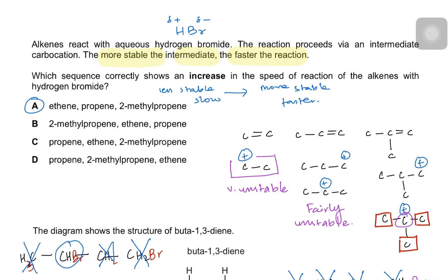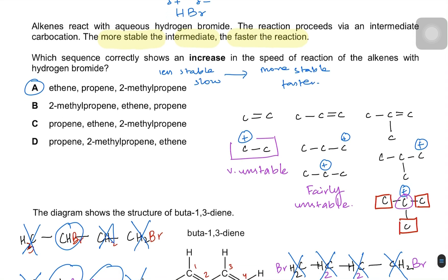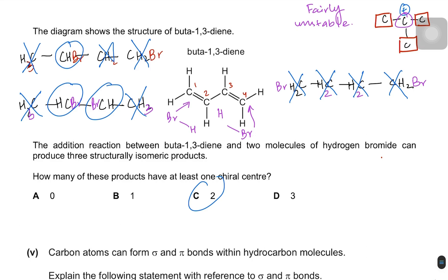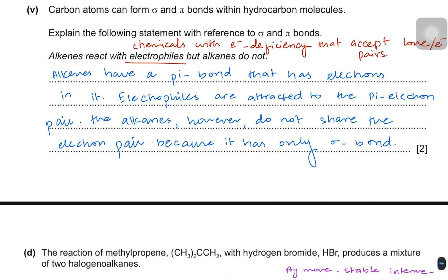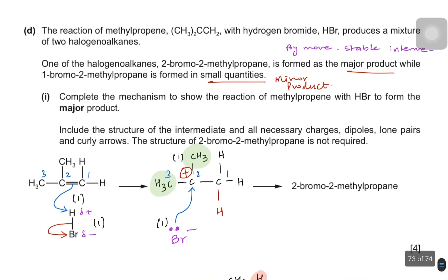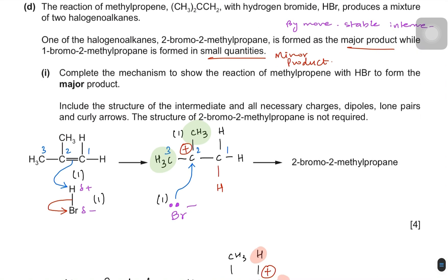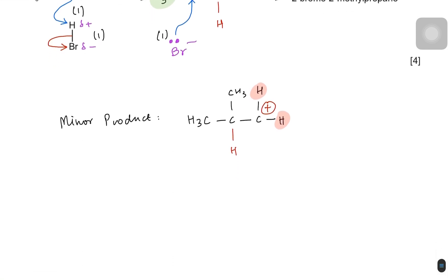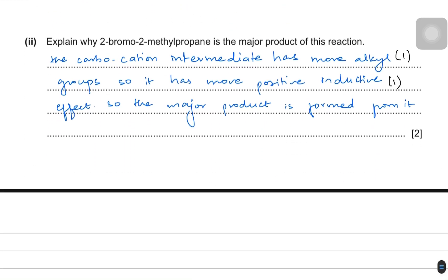Hey everyone, welcome back to another video by Cam Room 5. Last time we were doing some past paper questions for the electrophilic addition reactions. We started with some MCQs where we looked at how the intermediate could be stable depending on the inductive effect, then we did some questions about why pi bonds are reactive and why sigma bonds are less reactive. Then we did the mechanism including the partial charges, lone pairs, the carbocation intermediate, the major and minor product, and we concluded that it is the inductive effect which decides whether the intermediate is going to be stable or unstable.